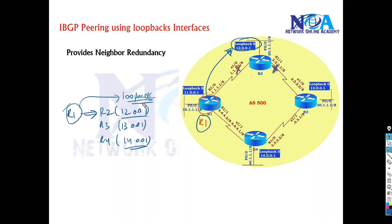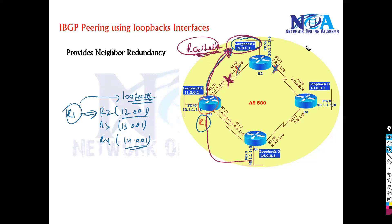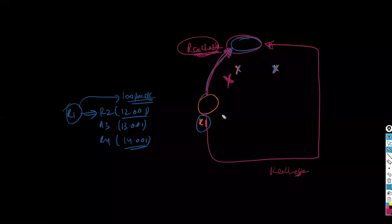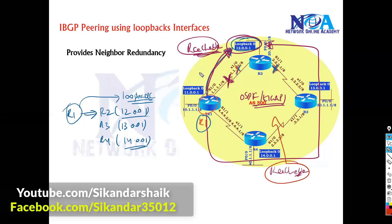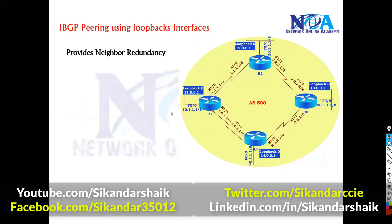The advantage in terms of redundancy: as long as this loopback is reachable, the neighborship will stay up. Even if one physical interface goes down, router one still has reachability to the loopback via an alternate path, so the neighborship remains up. In production networks, you run an IGP like OSPF or EIGRP to provide that reachability, and as long as the loopbacks are reachable, neighbors will form.